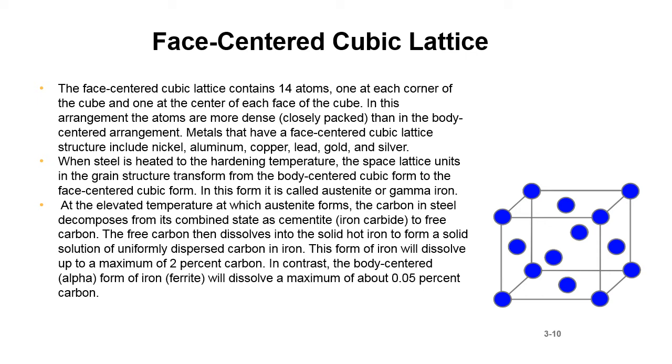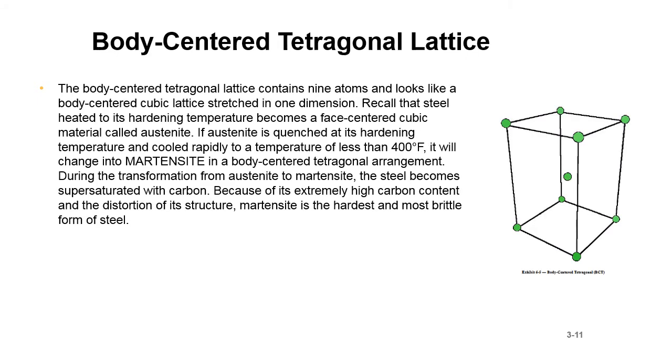Body-centered tetragonal lattice. The body-centered tetragonal lattice contains nine atoms and looks like a body-centered cubic lattice stretched in one dimension. Recall that steel heated to its hardening temperature becomes a face-centered cubic material called austenite.